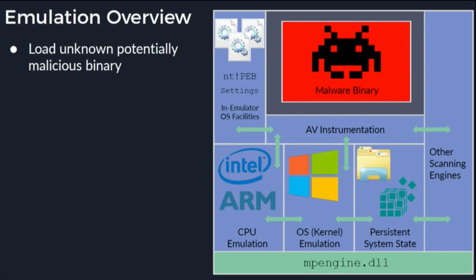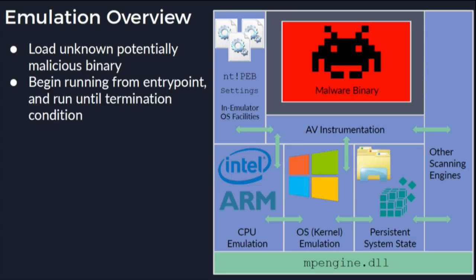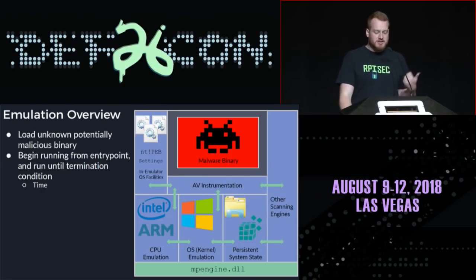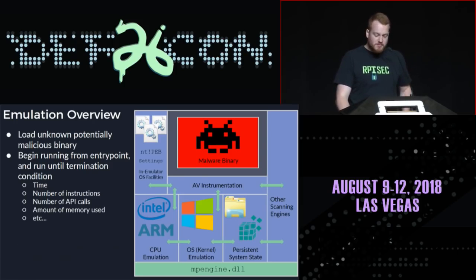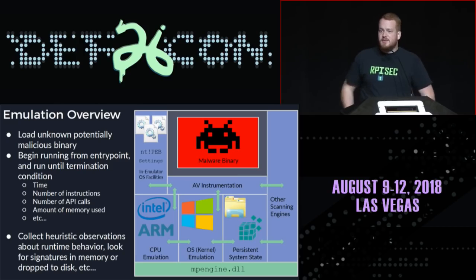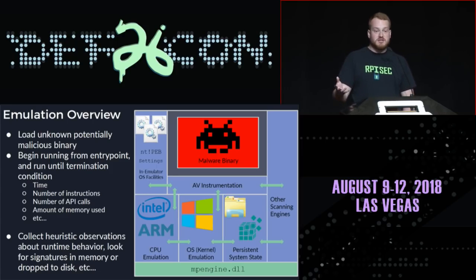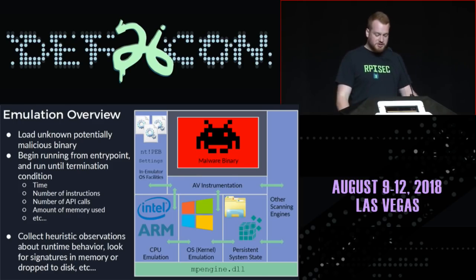An overview of emulators in general: you begin by loading a potentially malicious unknown binary identified through less expensive analyses like hashing or import-based heuristics. You run the binary in an emulated environment with a CPU emulator for the particular architecture — generally x86. Throughout execution you collect observations and terminate at some point based on time run, number of instructions executed, API calls made, or memory used. You collect heuristic observations about the malware's behavior. You might also hook implementations — for example, if the malware calls CreateFile, you'd look for a known malware signature or hash at that point.